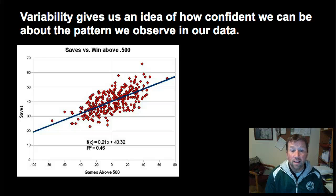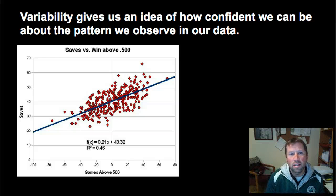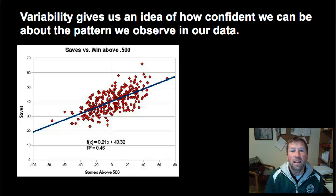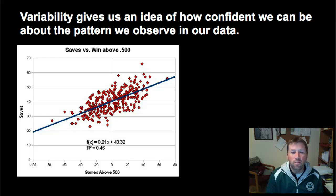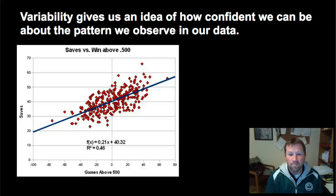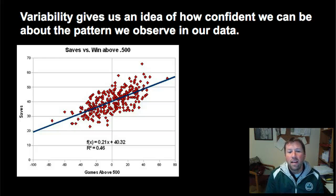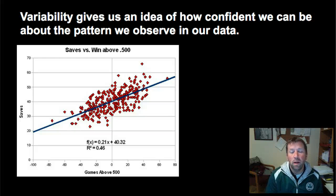It also calculated what's called an r-squared value. The r-squared value tells us how closely those data points fit to the line — in this case it's 0.46. The maximum would be 1, meaning the points fit exactly on the line, and the minimum is 0, meaning the points are completely random. So at 0.46, that gives us an idea of the variability in the data set. It's below 0.5, so even though there is a slight trend in the data, we can't be very confident that the line really describes the relationship — there are probably other factors affecting the number of saves.